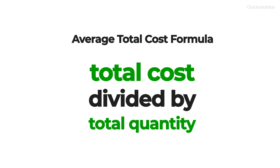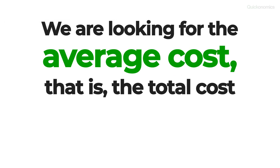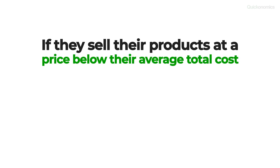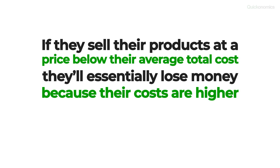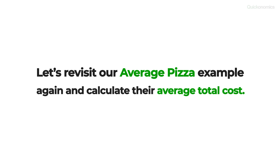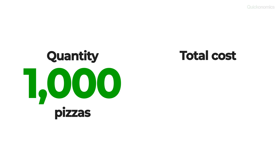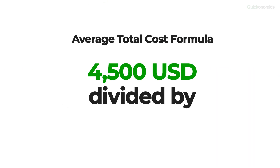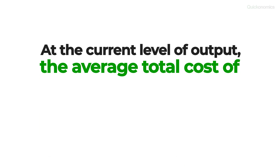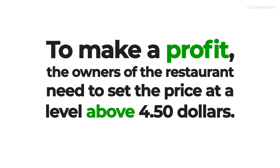Now on to the third and final step: dividing the total cost by the total quantity. We can calculate the average total cost by dividing the total cost by the total quantity. This step is necessary because we are looking for the average cost — that is, the total cost per unit. This is critical for companies when it comes to pricing decisions. If they sell their products at a price below their average total cost, they'll essentially lose money because their costs are higher than their revenue. Revisiting our Average Pizza example, we know the quantity is 1000 pizzas and the total cost is four and a half thousand US dollars. Plugging these numbers into the formula, the average total cost is four dollars and fifty cents. That means at the current level of output, the average cost of producing one pizza is exactly four and a half dollars. So to make a profit, the owners need to set the price above four and a half dollars.